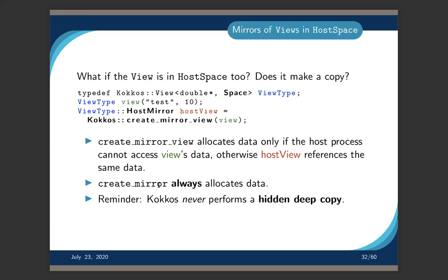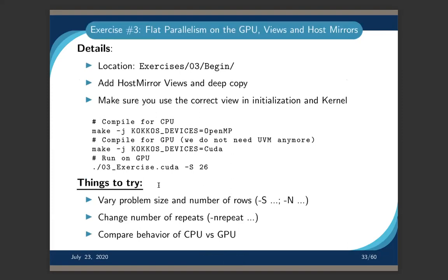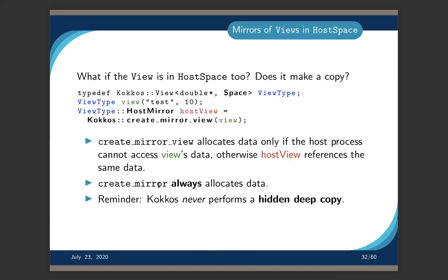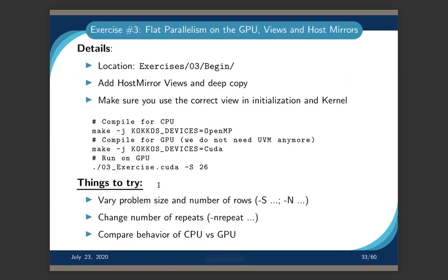If you truly need a copy for algorithmic reasons rather than for data movement, use create_mirror (without the 'view') — that always allocates new data. Exercise 3 adds these host mirror views and uses deep_copy to copy data back and forth, eliminating the need for UVM.